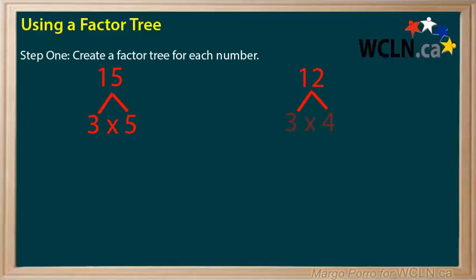12 factors into 3 times 4. 3 is prime but 4 is not prime. To have all prime factors, 4 is broken into 2 times 2 and the 3 is brought down.